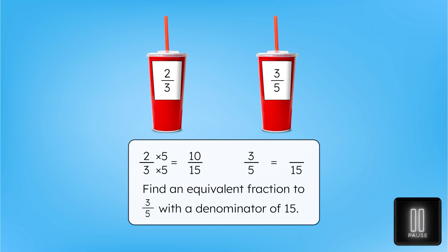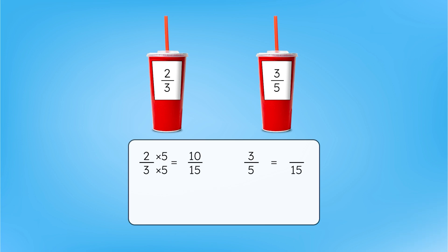Pause the video here to find an equivalent fraction to three-fifths with a denominator of fifteen. What did you multiply both the denominator and numerator by? Remember to check the denominator first. Since five times three equals fifteen, you'll need to multiply both the numerator and denominator by three for an equivalent fraction of nine-fifteenths. Since ten-fifteenths is more than nine-fifteenths, that means the soda that is two-thirds full will have more than the soda that is three-fifths full.